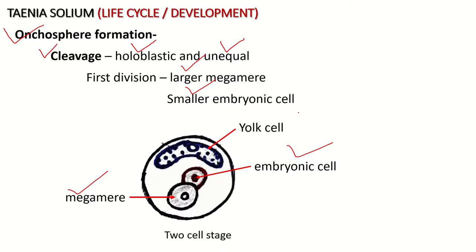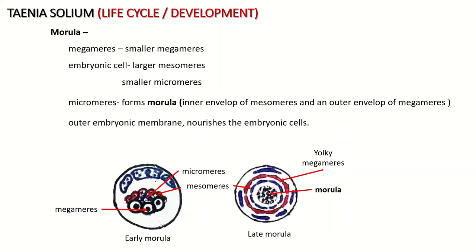The larger megamere further divides and forms many smaller megameres. From the embryonic cell, two types of cells are formed: relatively larger cells called mesomeres and smaller cells called micromeres. So megameres give rise to smaller megameres, embryonic cells give rise to mesomeres and micromeres.